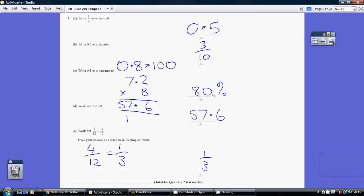Question 2. A half as a decimal is 0.5. Remember, this is the tenths column, and 5 tenths is the same thing as a half.